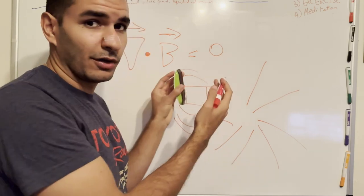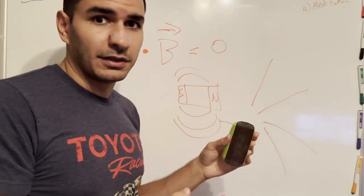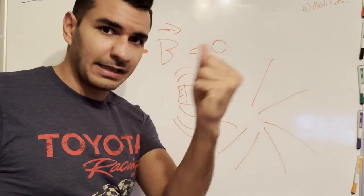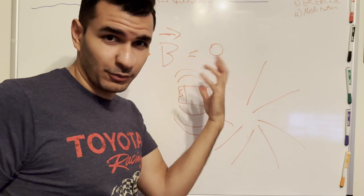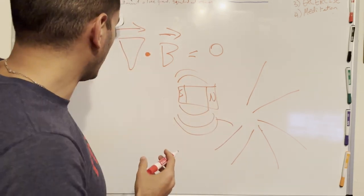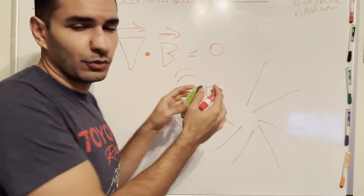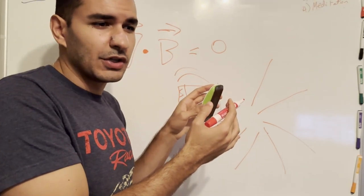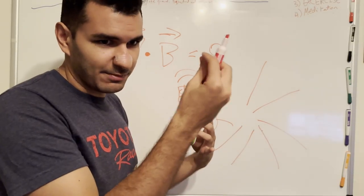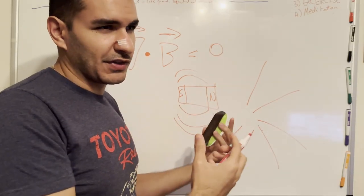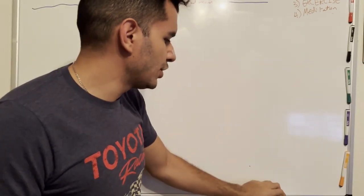There will never be a magnet with lines that just go outward — that does not exist. There's always going to be north-south polarity. Because there's no monopole, there's no divergent behavior for the magnetic field. This is Gauss's Law for magnetic fields, and it tells you that you can't create a magnetic field from some type of 'magnetic stuff' — the magnetic field has to come from charges.